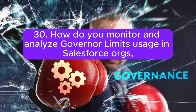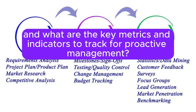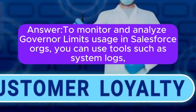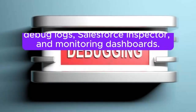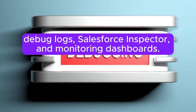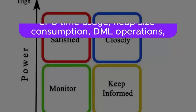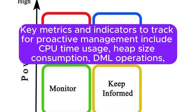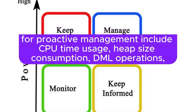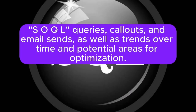Question 30: How do you monitor and analyze governor limits usage in Salesforce orgs, and what are the key metrics and indicators to track for proactive management? Answer: To monitor and analyze governor limits usage, you can use tools such as system logs, debug logs, Salesforce Inspector, and monitoring dashboards. Key metrics to track include CPU time usage, heap size consumption, DML operations, SOQL queries, callouts, and email sends, as well as trends over time and potential areas for optimization.